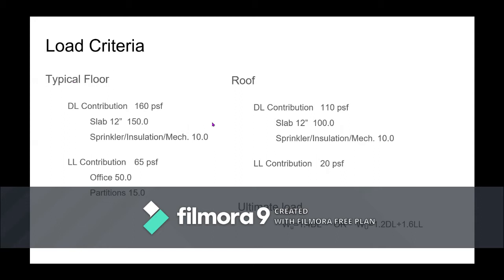Here's the load criteria given. For the typical floor, the dead load is 160 PSF and the live load is 65 PSF. Most of the dead load comes from the self-weight. For the roof, the dead load is 110 PSF and the live load is 20 PSF. For design we use the ultimate load, applying factors: either 1.4 times dead load, or 1.2 dead load plus 1.6 live load — whichever is bigger.